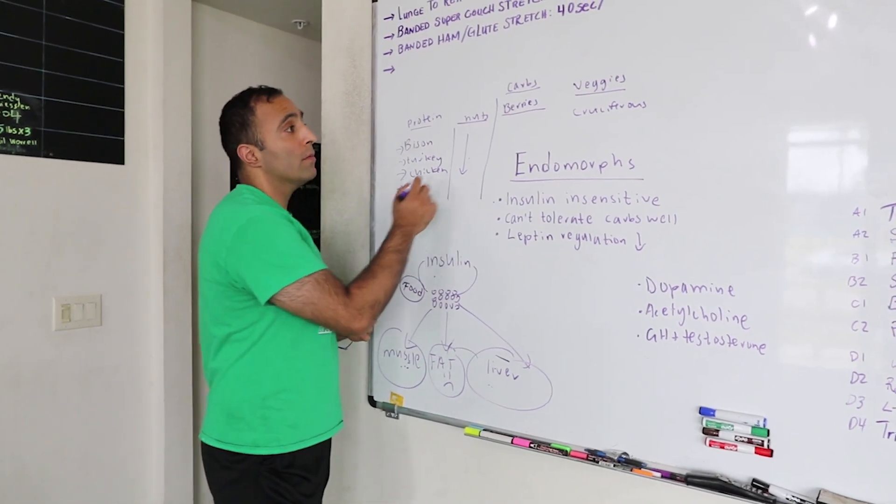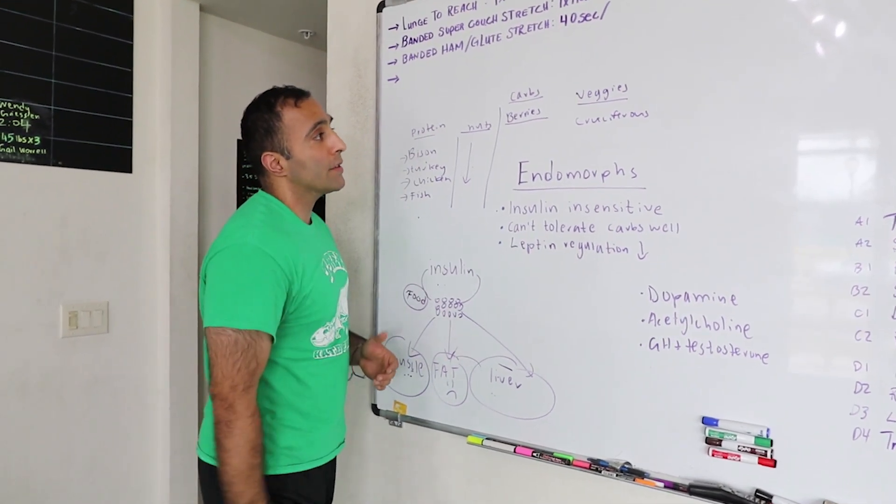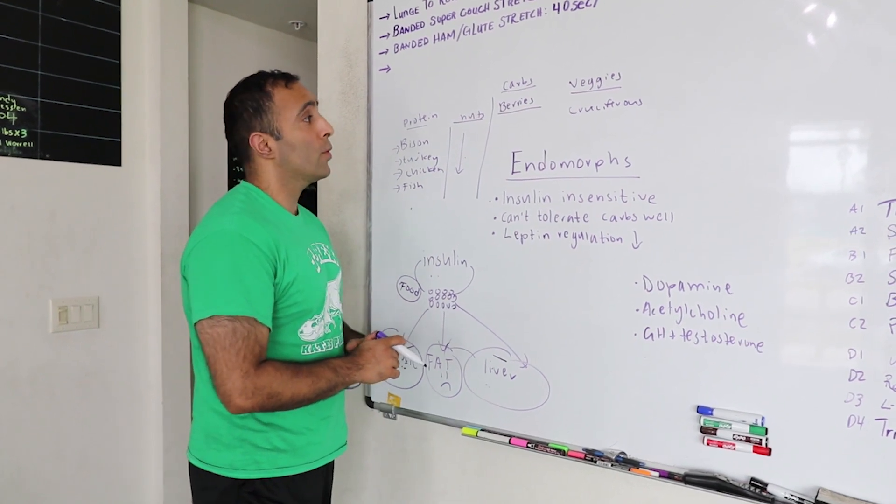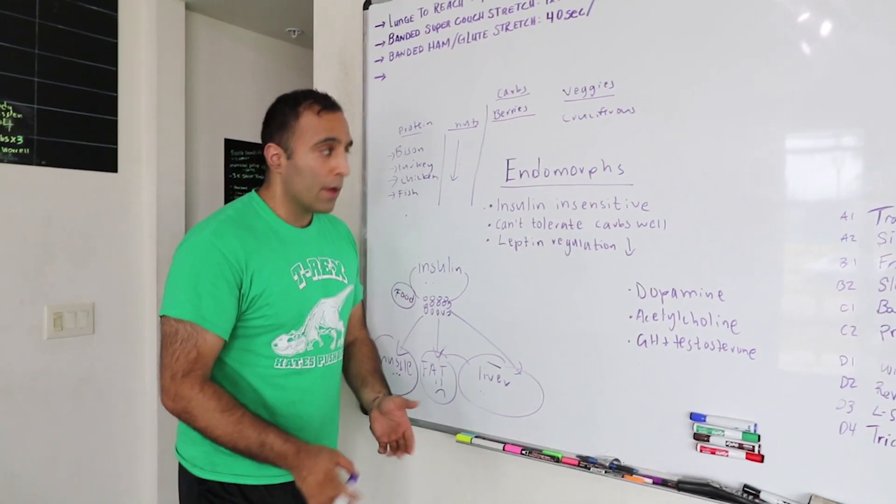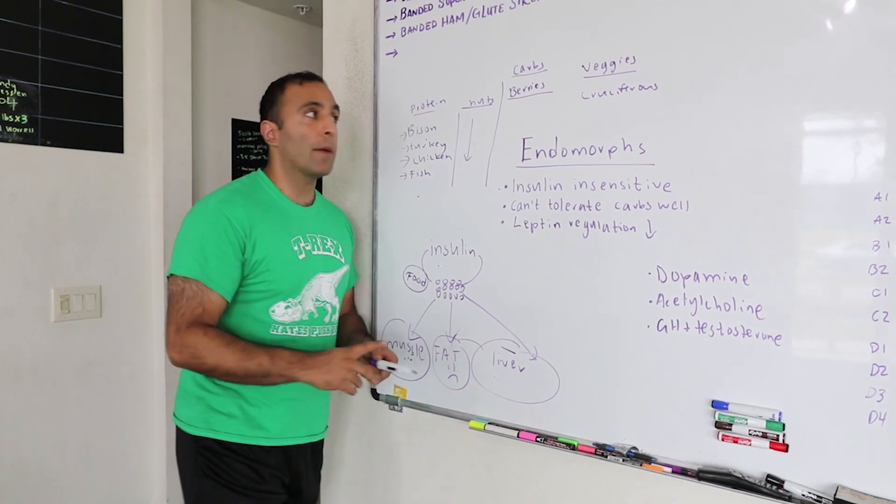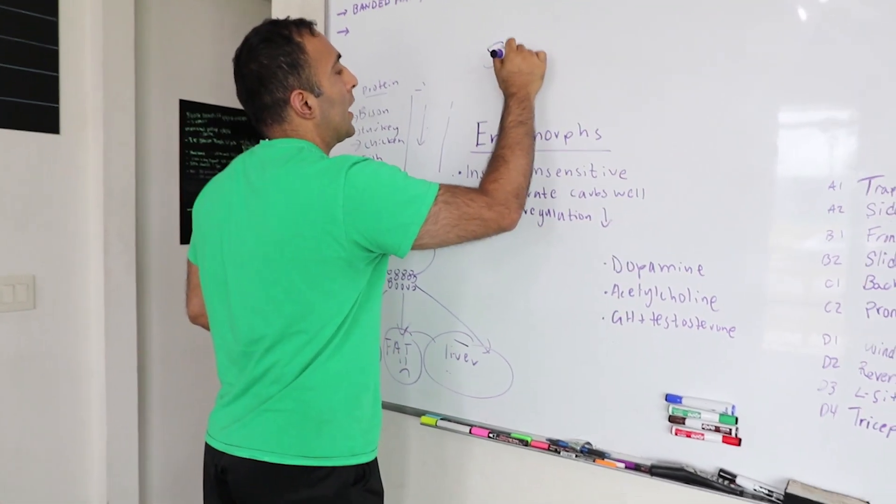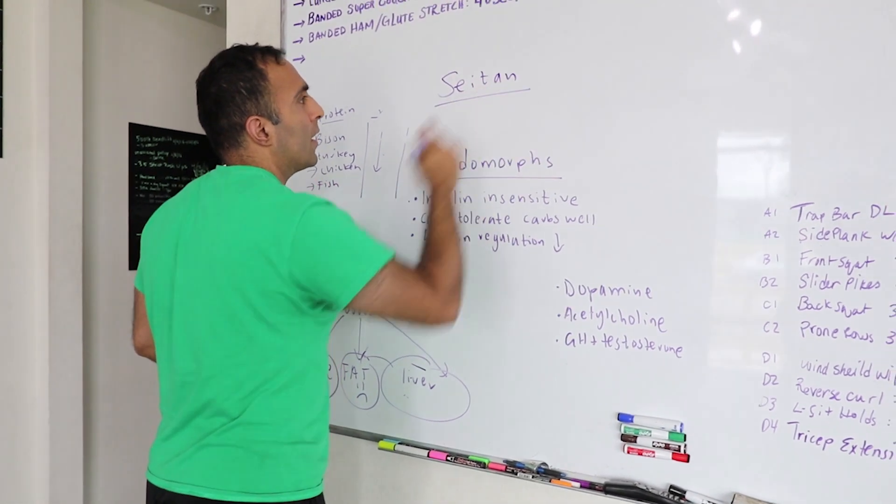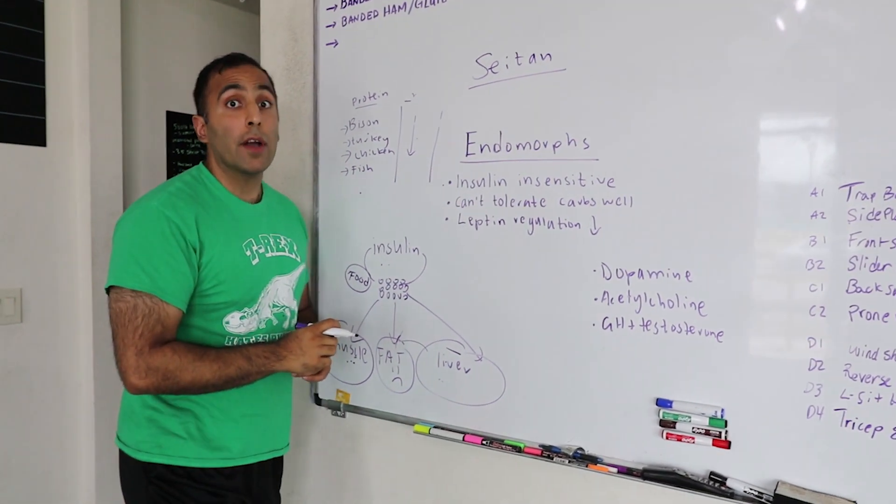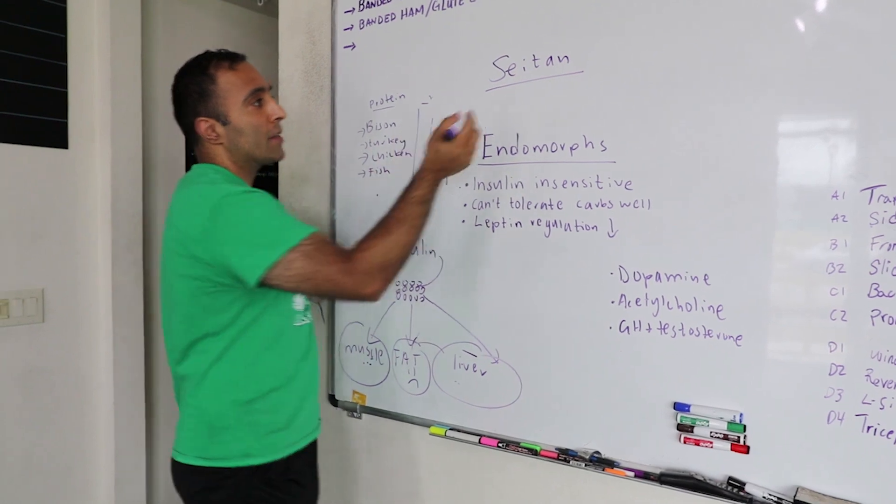If you are a vegan, it's a little trickier but you can make it happen. There's a protein called seitan, I believe it's spelled S-E-I-T-A-N, and I think it's like 21 grams per third cup of protein. You can do some seitan protein.